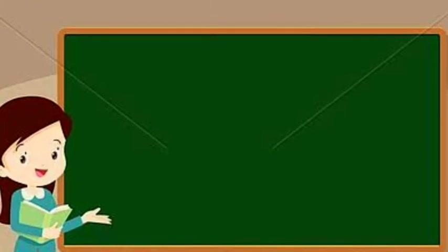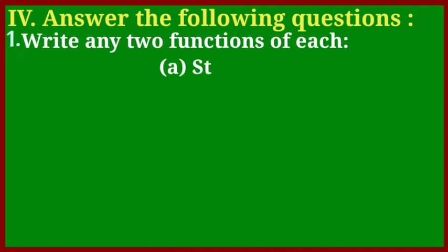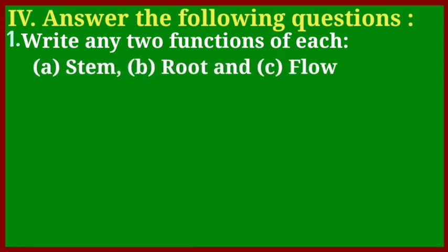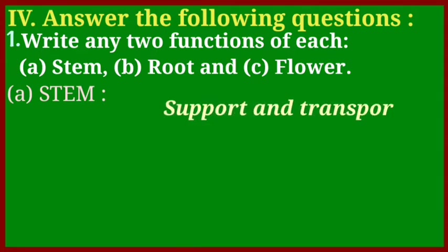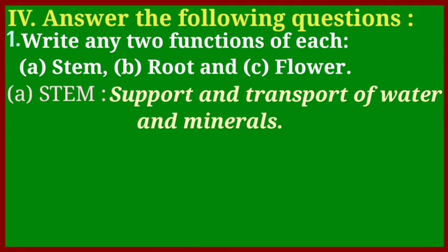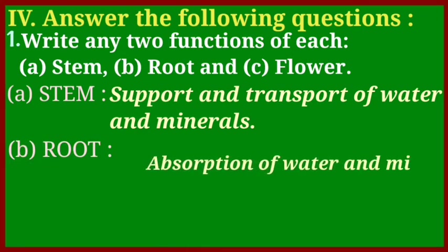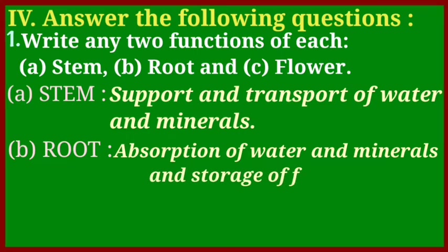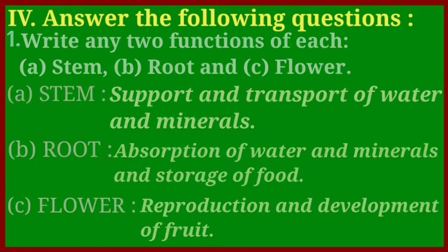The next heading is: Answer the Following Questions. Question number one: write any two functions of each — stem, root, and flower. Stem: support and transport of water and minerals. Root: absorption of water and minerals and storage of food. Flower: reproduction and development of fruit.